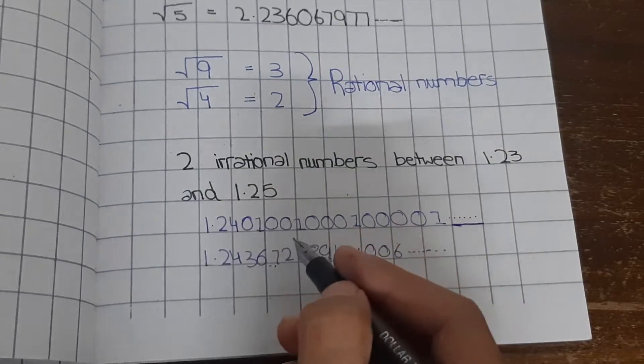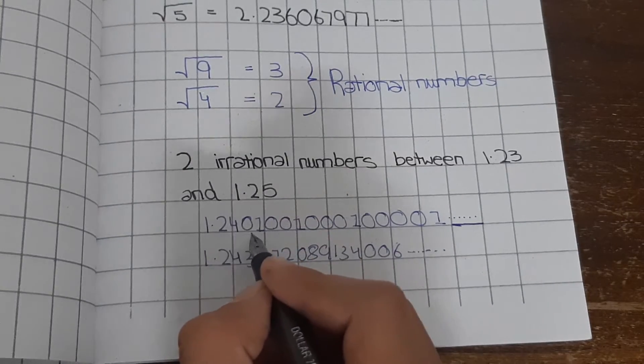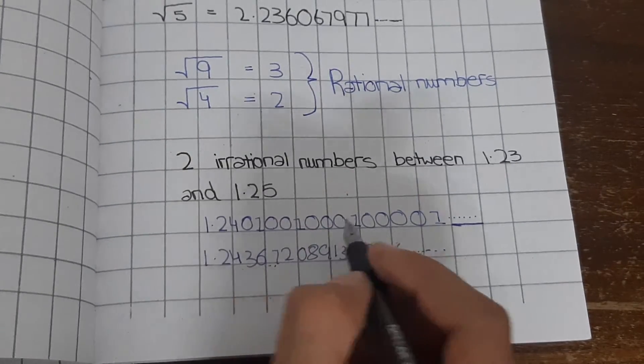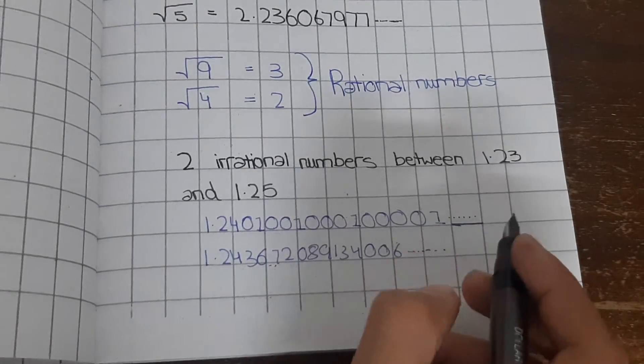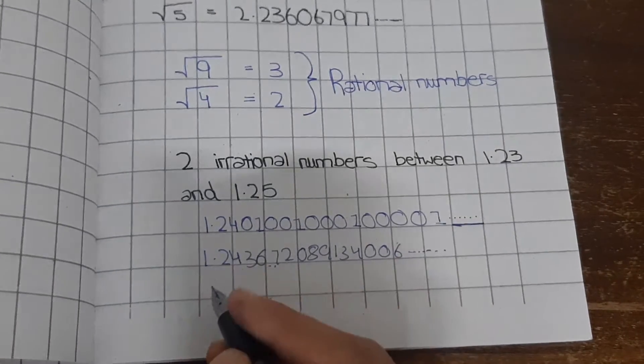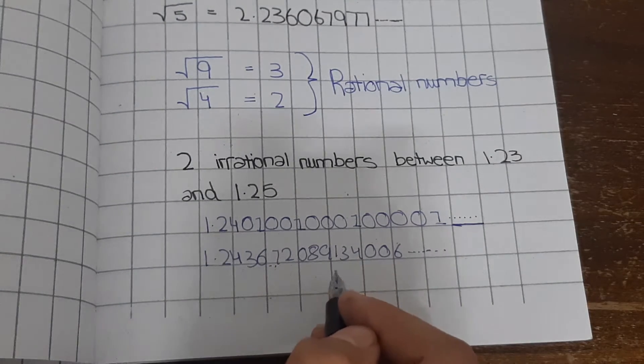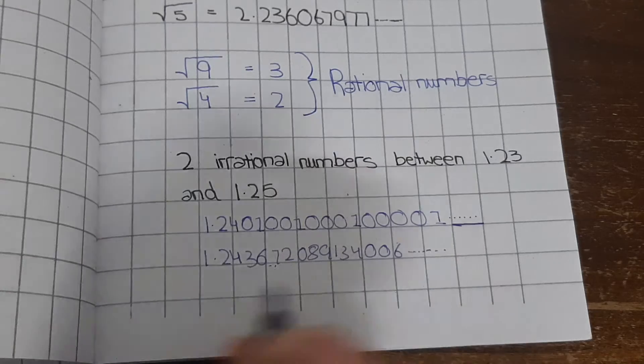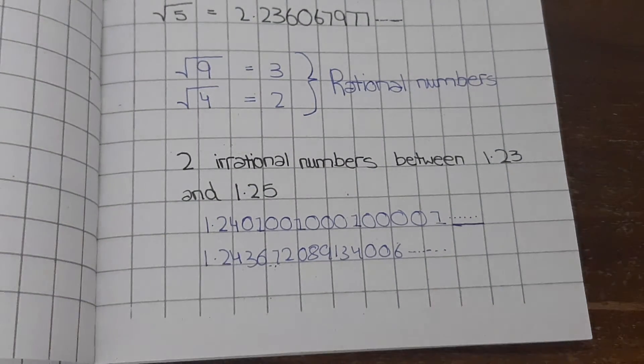We can write 1.240100100010 and then again 00001, and we can also write 1.24367208913400006. They both are irrational numbers because they are non-terminating and not recurring decimals. This one is totally random.